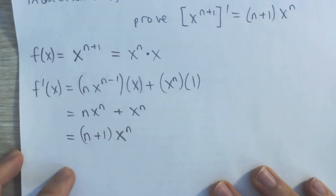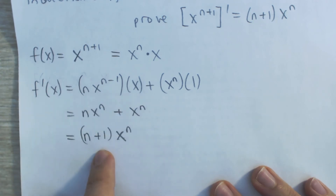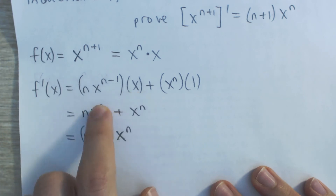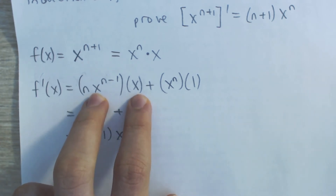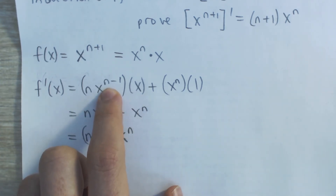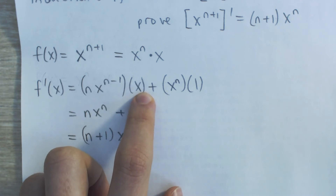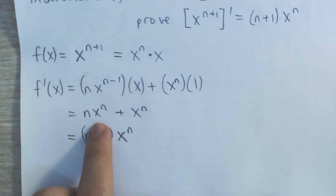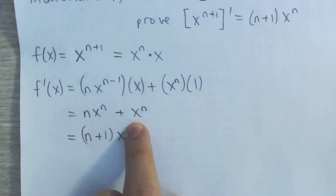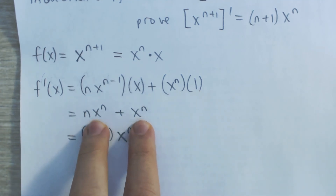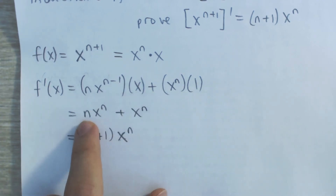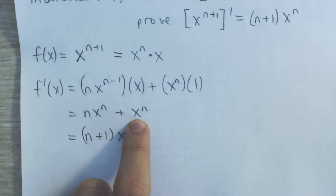So now on the left we have n times x to the n minus 1 times x. We have two powers of x and when we multiply things with the same base we add their exponents. This has an exponent of n minus 1 and this has an exponent of 1, so n minus 1 plus 1 is just n — giving us n times x to the n. And x to the n times 1 is just x to the n. If we factor out x to the n, we're going to have n plus 1 left over.